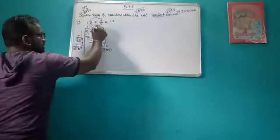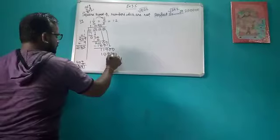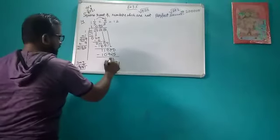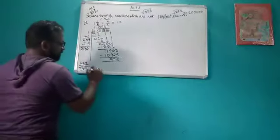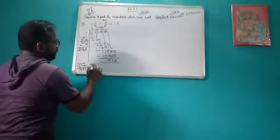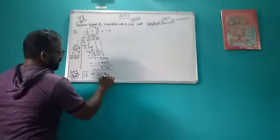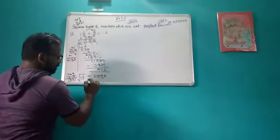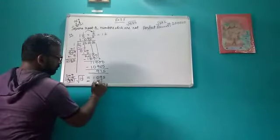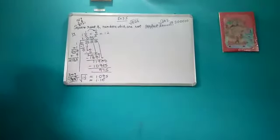The last pair will come here. Then bring it down: 1095 minus 10925 gives 975. So the square root of 1 whole 1 by 5 is approximately 1.095, and when rounded off it becomes 1.10.